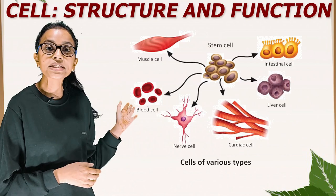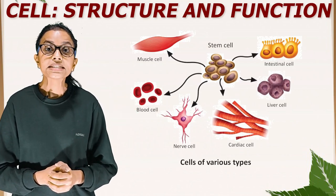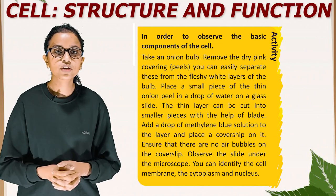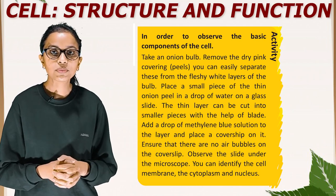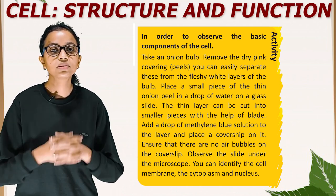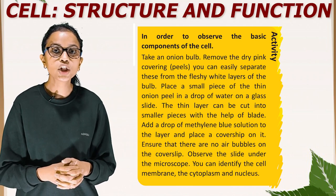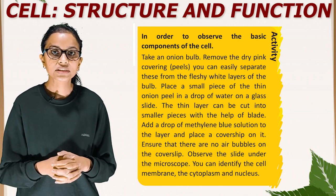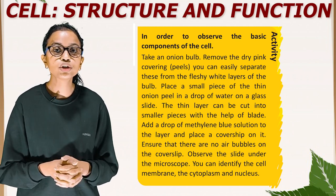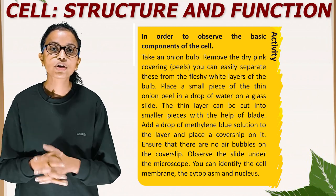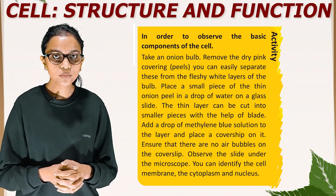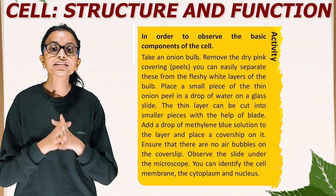Students, this is the diagram showing cells of various types. Now it's time for an activity. In order to observe the basic components of the cell, take an onion bulb. Remove the dry pink covering peels, which you can easily separate from the fleshy white layers of the bulb. Place a small piece of the thin onion peel in a drop of water on a glass slide. The thin layer can be cut into smaller pieces with the help of a blade. Add a drop of methylene blue solution to the layer and place a cover slip on it. Ensure that there are no air bubbles on the cover slip. Observe the slide under the microscope. You can identify the cell membrane, the cytoplasm, and the nucleus.